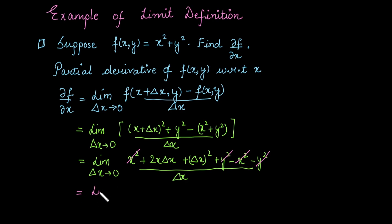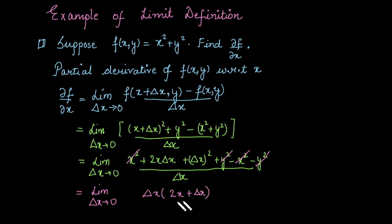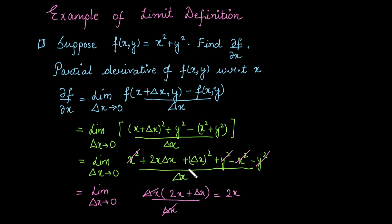We have the limit as delta x approaches 0. From here, we can factor out delta x. The remaining terms are 2x plus delta x, divided by delta x. Now this delta x cancels with the one in the denominator. Substituting the limit, we have 2x. This means the partial derivative of this function with respect to x is equal to 2x. This is how we can apply the limit definition to find the partial derivative.